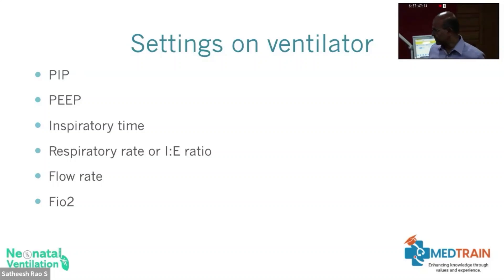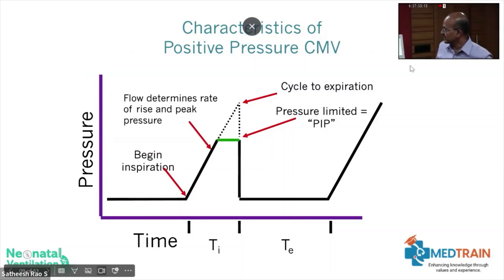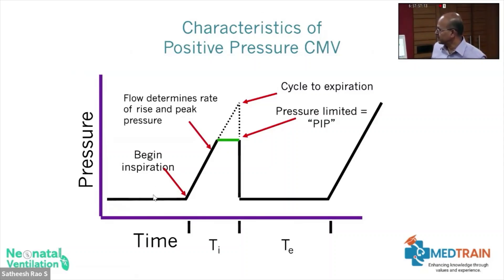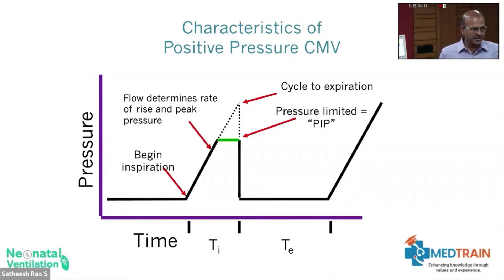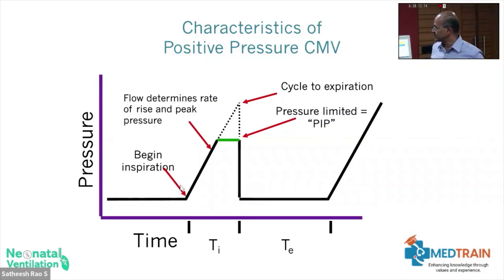In positive pressure ventilation, at the beginning of inspiration the PEEP is the baseline — we never start at zero. We always use PEEP because without it the lung will go below closing volume and you increase atelectrauma, making lung damage much higher. With the onset of inspiration the pressure rises, and the flow determines the rate of rise.